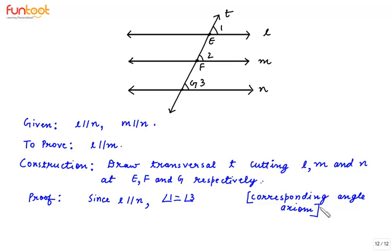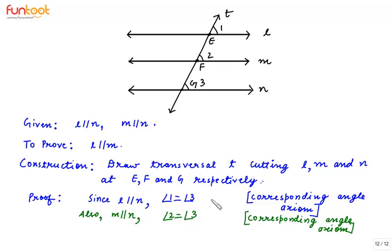The same thing can be done for the other pair of parallel lines. Since line M is parallel to line N, by the corresponding angle axiom, we can say that angle 2 is equal to angle 3. We call these equation 1 and equation 2. From equations 1 and 2, we can conclude that angle 1 is equal to angle 2.